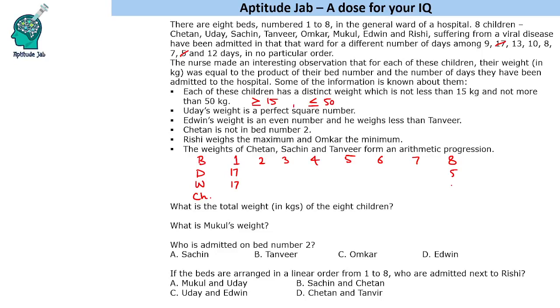So total weight of this person is 40 and then 7 bed will be for 7 days because 7 times 7 is 49. Similarly, 6 into 8 is 48.